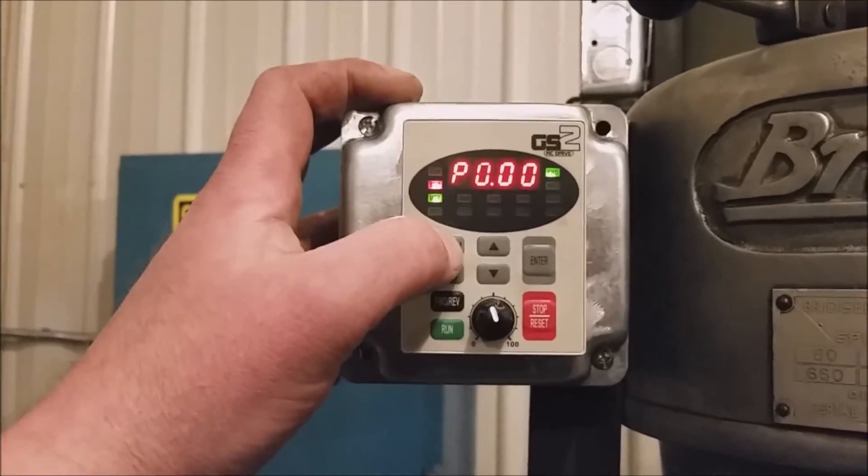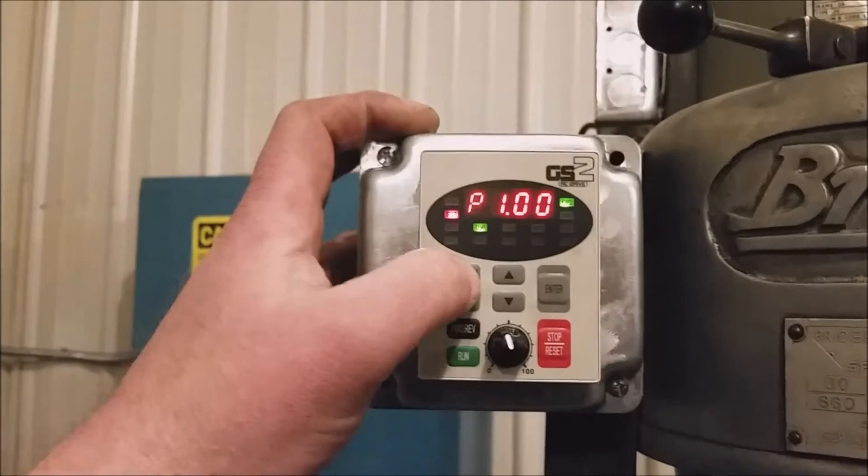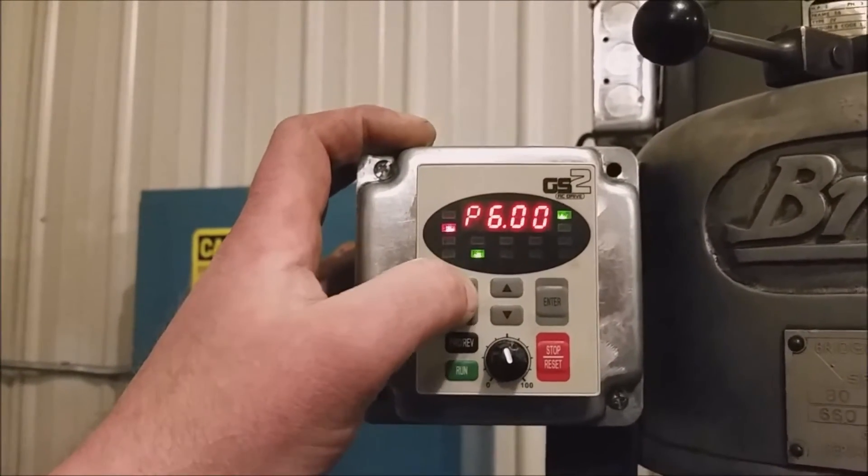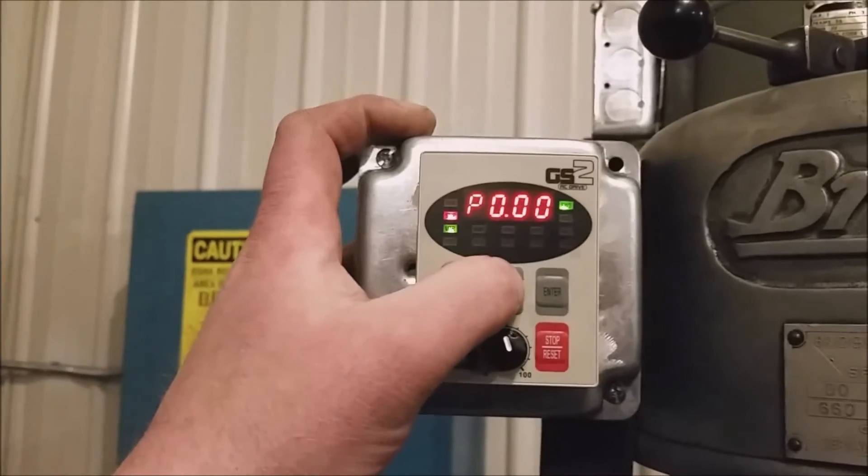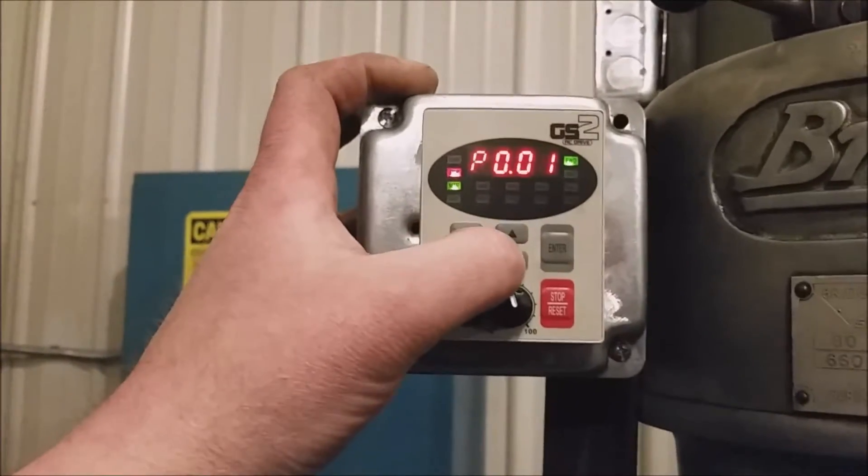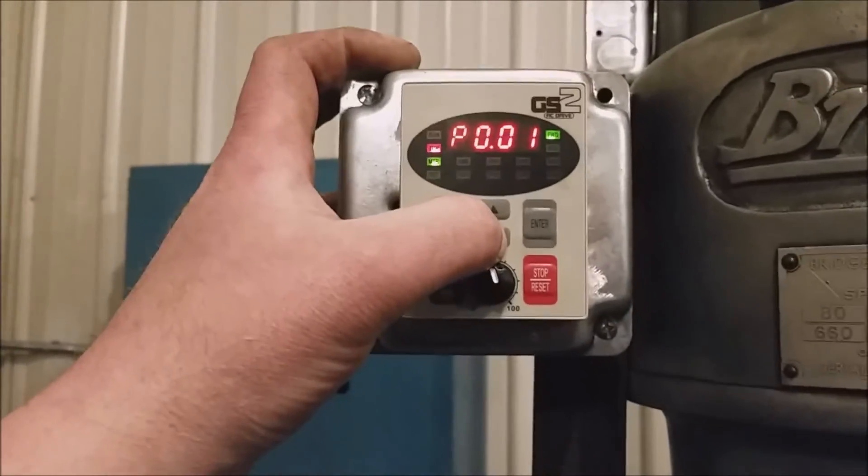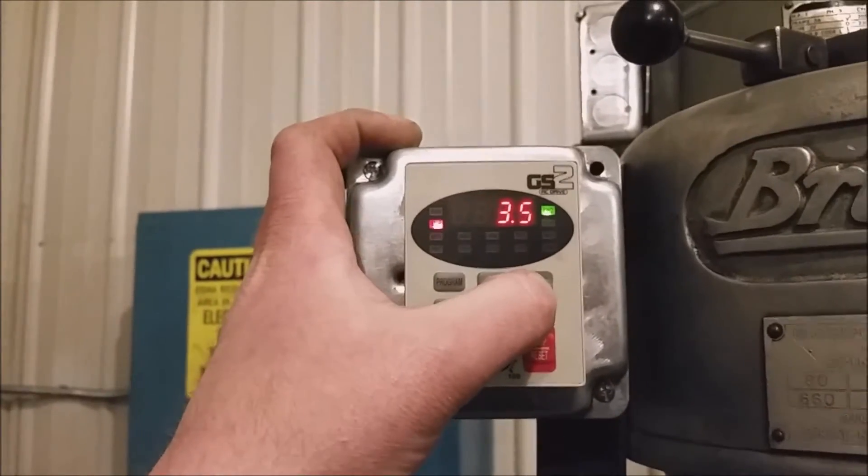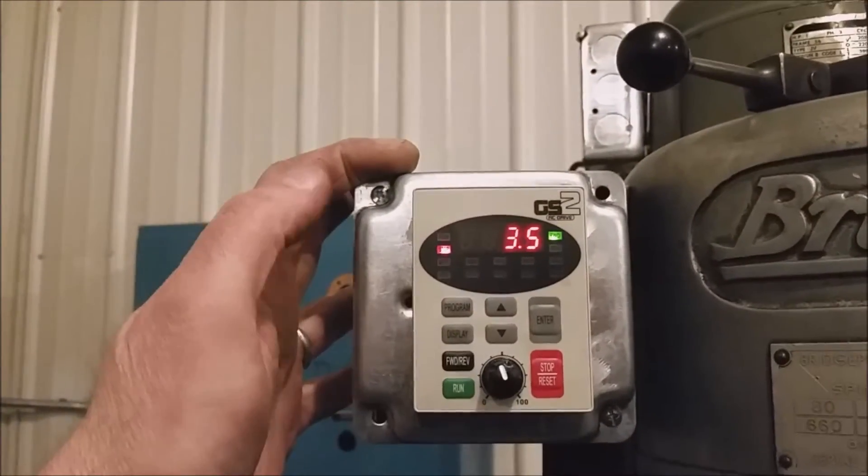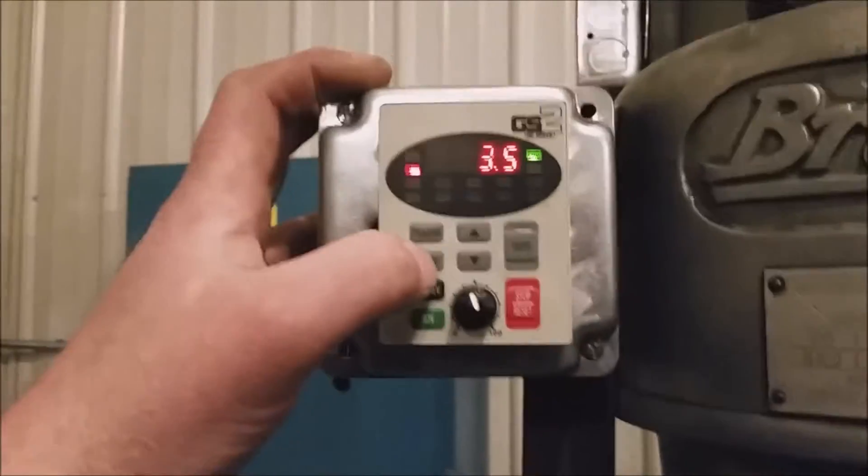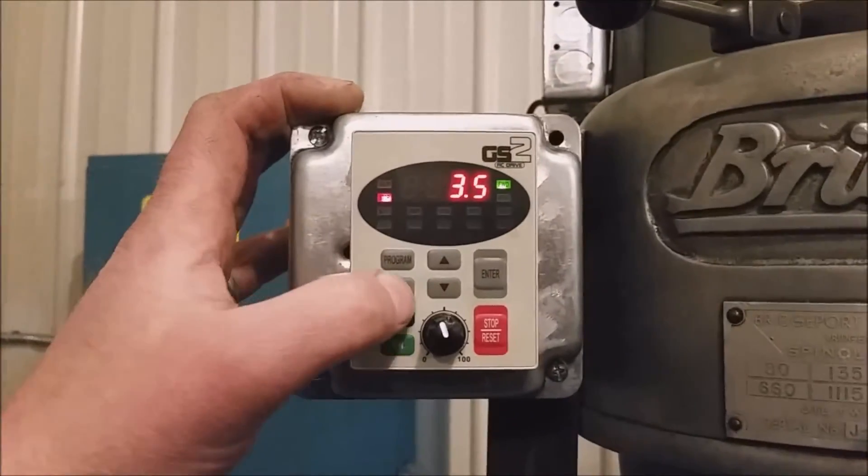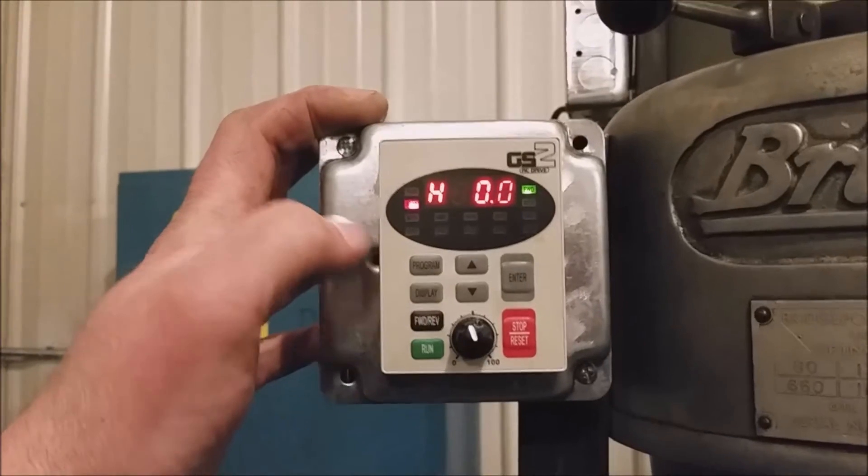That's actually really easy. You just hit the program button and then you can toggle through the different ones. So say if you want to, on the first one, P001, which I don't remember what it was, 3.5 amps, that was the amp setting. It'll be different for every different machine. Hit display to get back out of it.